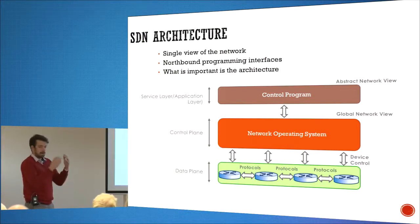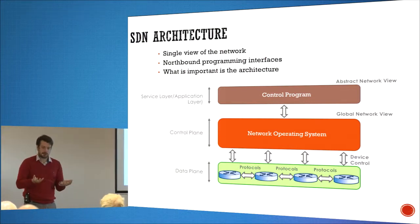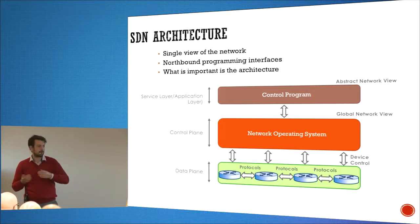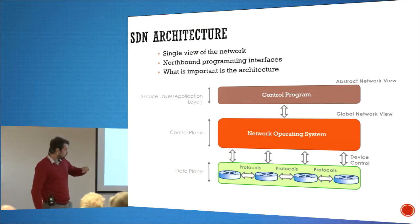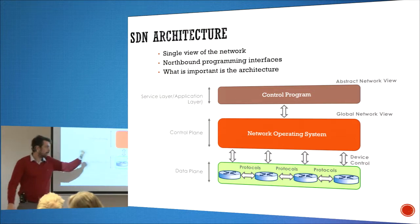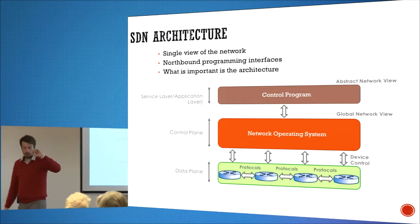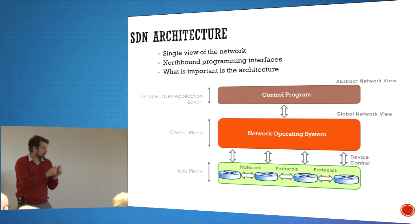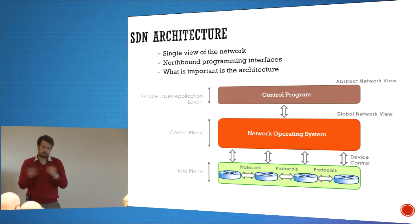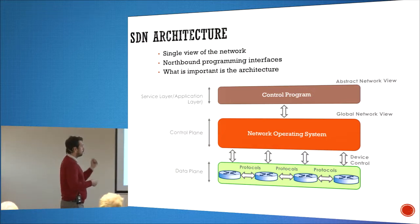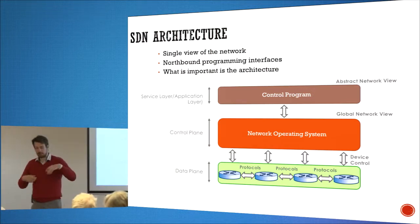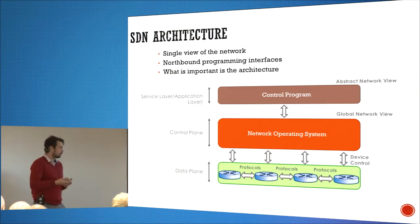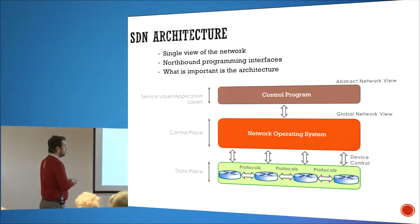This is the general architecture of SDN, and this has been accepted across the industry. We have three layers. We have our devices running — just throwing packets around. We have our control plane, which is currently distributed between devices and in the protocol — our internet, BGP routing protocol, and so on.